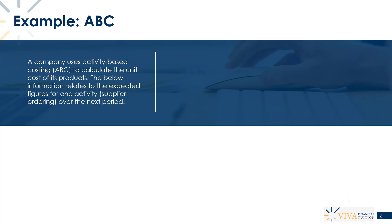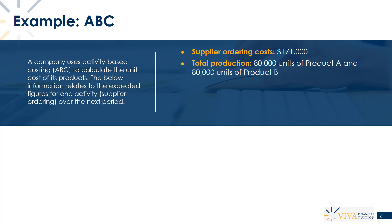The information relates to the expected figures for one particular activity, which is the supplier ordering costs over the next period. The supplier ordering costs are $171,000 — that's our estimated figure for the next period.